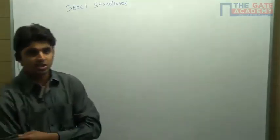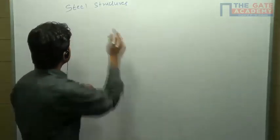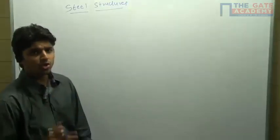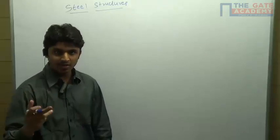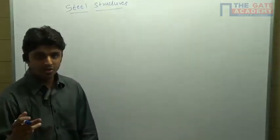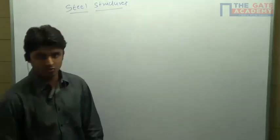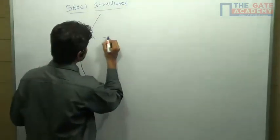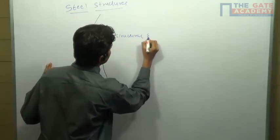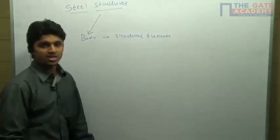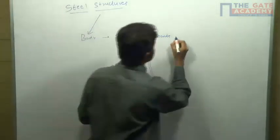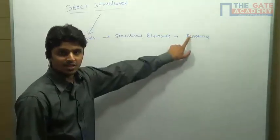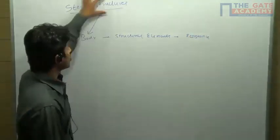Let us start with the steel structures. So what do you mean by structure? Structure consists of two terms: steel and structure. A structure is a body composed of several structural elements which can set up the resistance against deformation for the external loads.